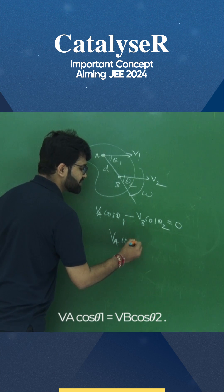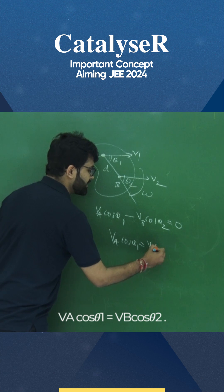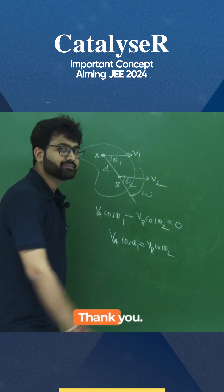It means VA cos theta1 should be equal to VB cos theta2. Thank you.